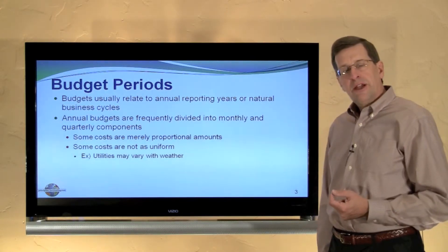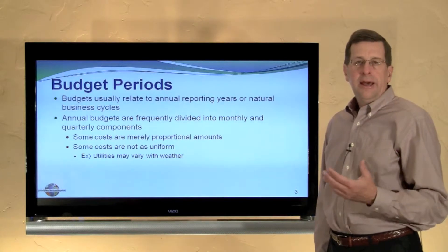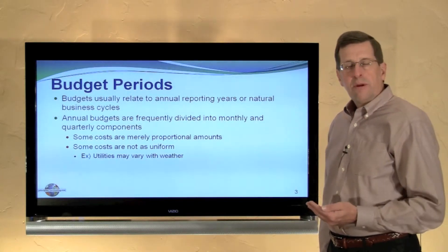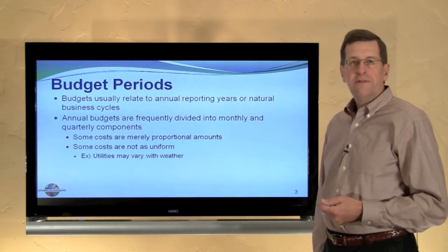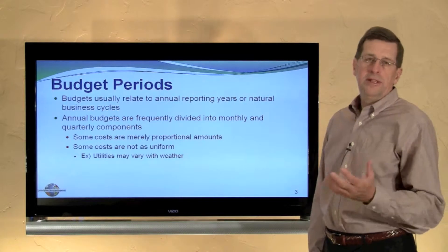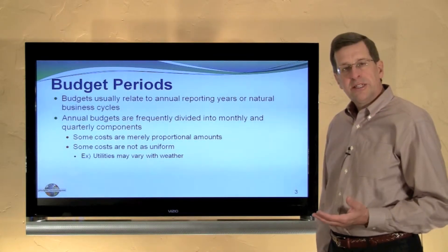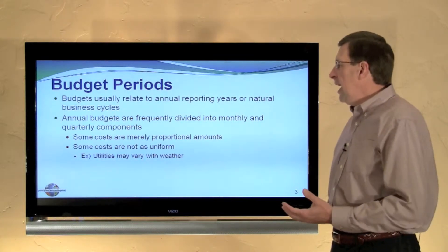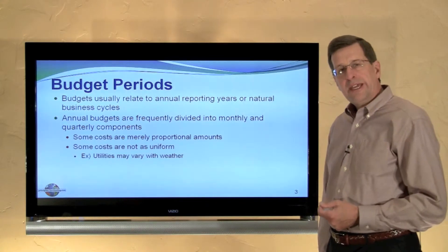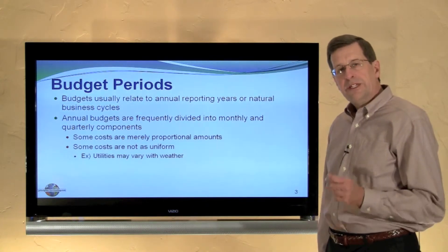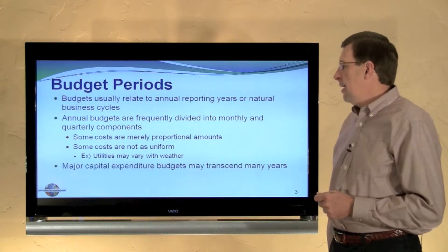Some of the costs in a monthly or quarterly budget are merely a proportional amount of the annual total. However, some costs are not uniform. For example, an office building would probably have higher fuel costs in the winter due to heating, or if it's in a tropical area it may have higher costs in the summer due to cooling. One needs to take those factors into account in planning the budget, as every cost is not merely a proportional cost.